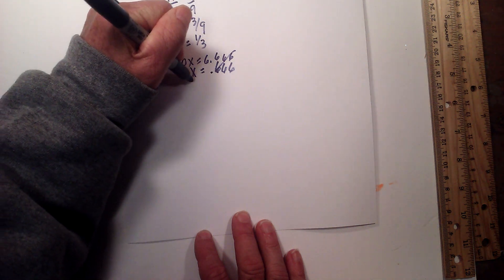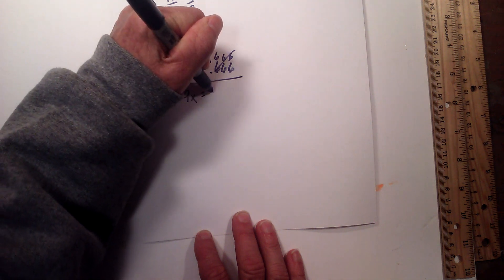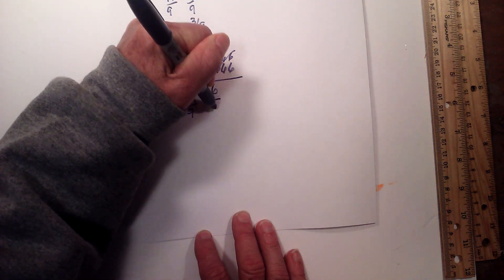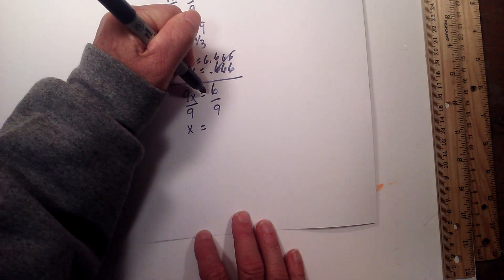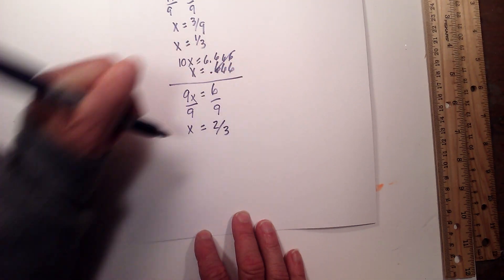These cancel. Subtract. We have 9x equals 6. Divide both sides by 9, and 3 will go into both of those, giving us 2/3.